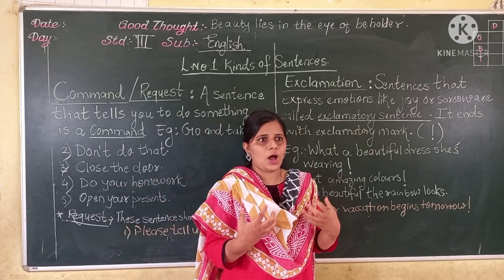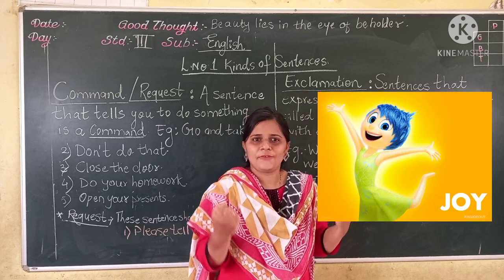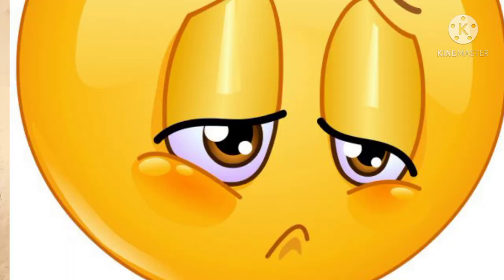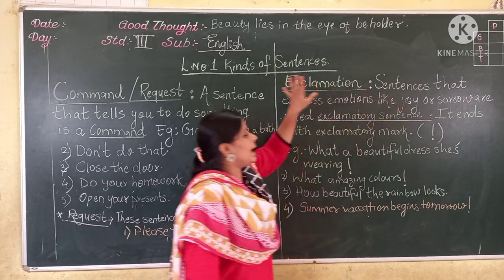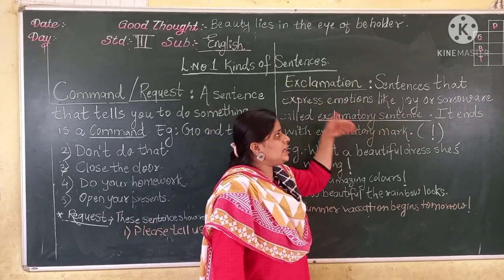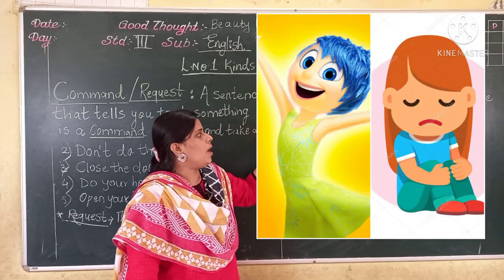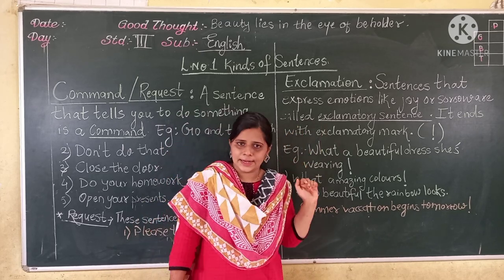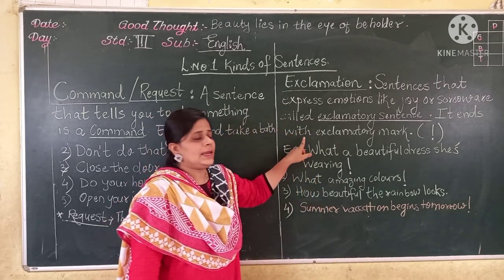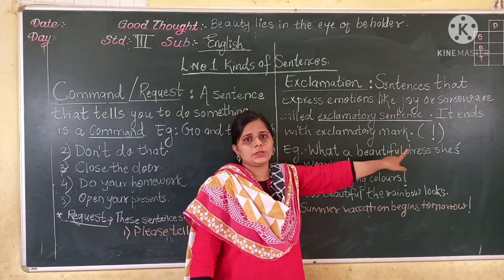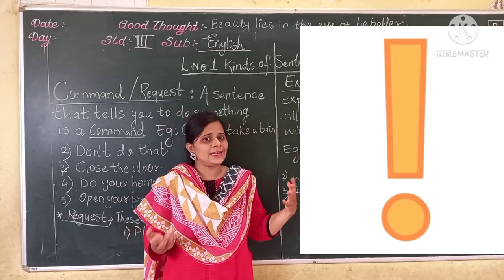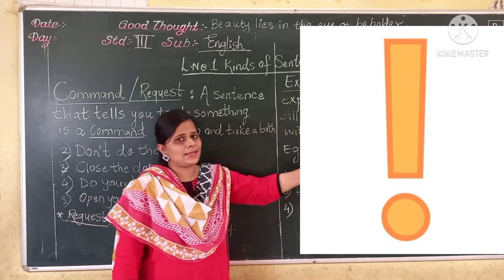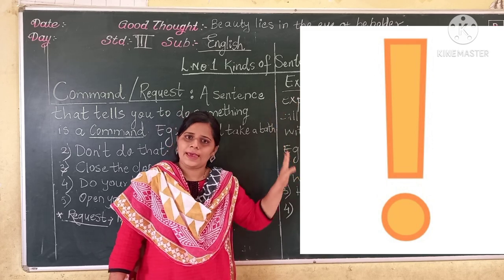Sometimes you are very happy, so how do you express that? 'I am very happy today.' When you are very sad, how do you express it? So you express your emotion. Exclamation is a sentence that expresses emotion like joy or sorrow — it is called an exclamatory sentence. These sentences end with an exclamation mark. You can see the picture of the exclamation mark. When you see a sentence that ends with an exclamation mark, you know that sentence is an exclamatory sentence.